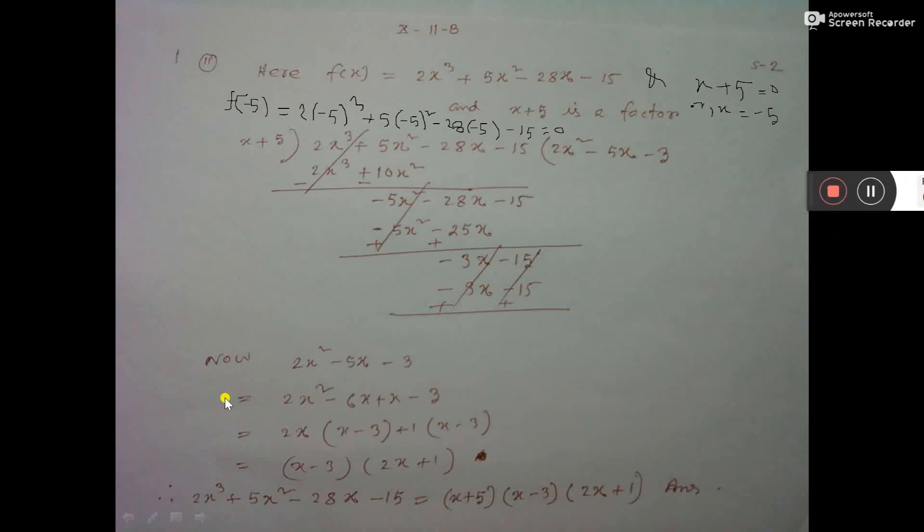See, here I have written f(x) equal to this and I have written x plus 5 equal to 0. So x is equal to minus 5. Now, you put x equal to minus 5 here, then every place of x you put minus 5. So minus 5 whole cube, minus 5 whole square and minus 5.